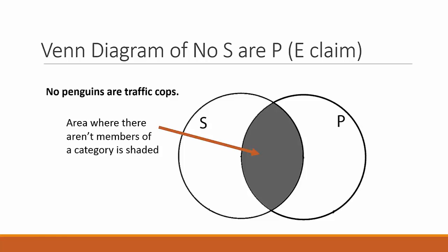In the Venn diagram of an E categorical claim, the middle area where the circles overlap is shaded because there are no S's that are also part of the P category. In this example, we want the diagram to represent that there are no penguins that are also traffic cops, so we shade the middle area.